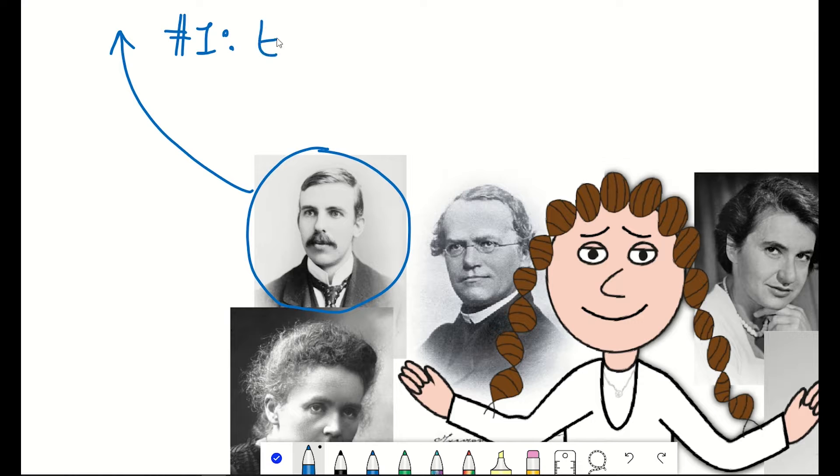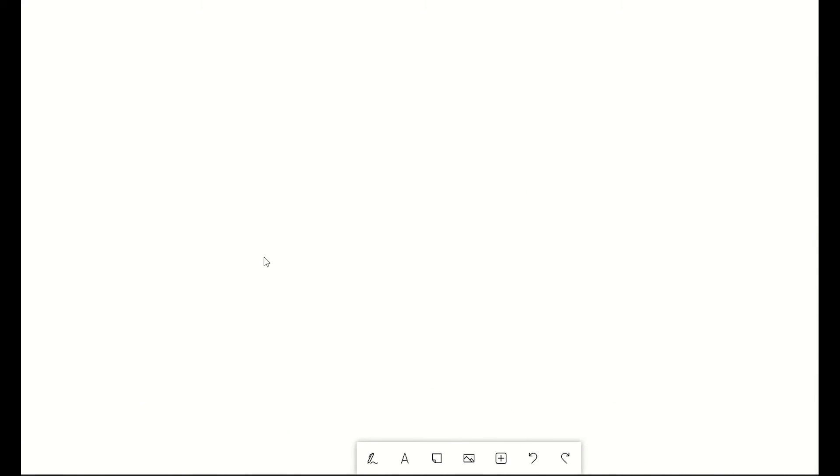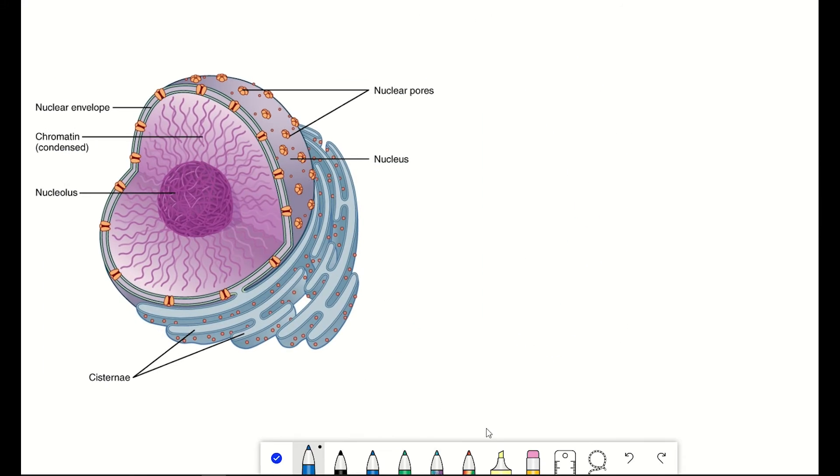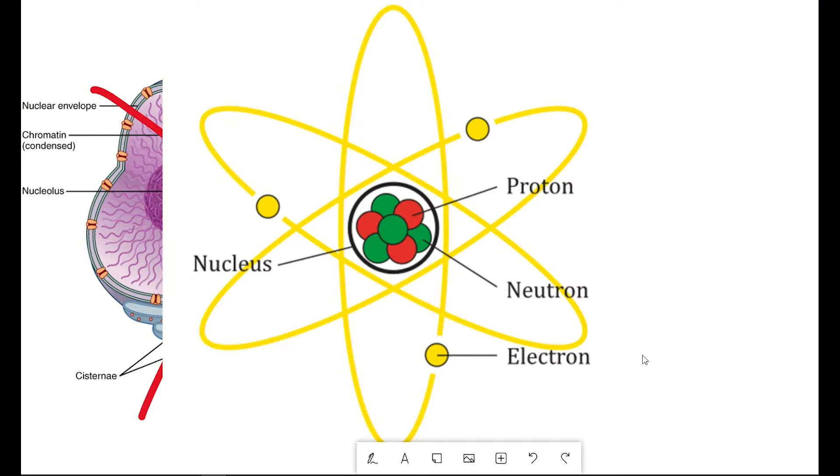Example number one, Rutherford, going against predictions. Rutherford contributed to our understanding of the structure of the nucleus. Not my favorite kind of nucleus, but this one, the one that makes up atoms. The center with protons and neutrons that are surrounded by electrons.